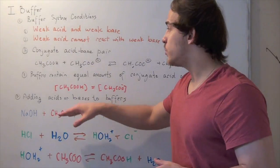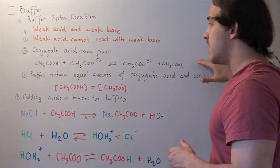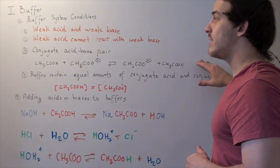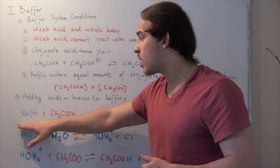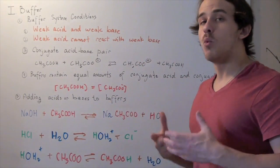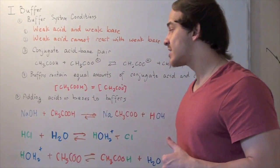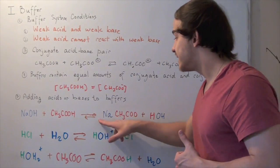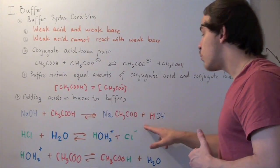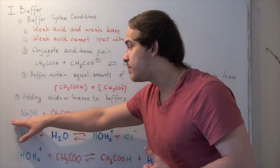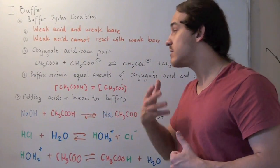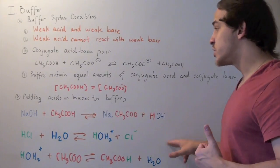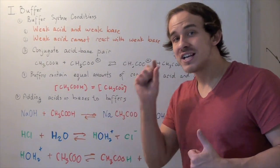For example, suppose we have the buffer system above, composed of acetic acid and acetate ion. If we add a strong base, such as sodium hydroxide, to our system, what will happen? This base reacts with our conjugate acid to produce the conjugate base and water. Before this base can affect our system, it's neutralized into a water molecule, so our pH only changes slightly.